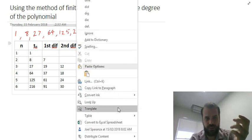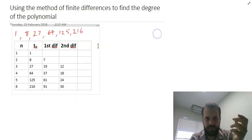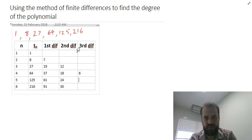But I still haven't found what I'm looking for, so I insert one more column. And this time I'm looking for the third difference. I subtract 18 from 12, 6. I subtract 24 from 18, 6. I subtract 30 from 24, 6. This is what I'm looking for.